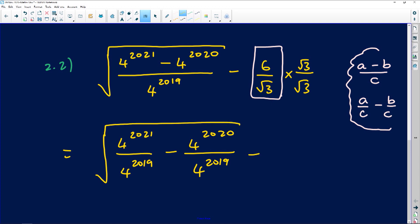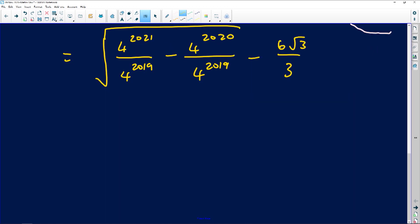When multiplying 6 over √3, it's 6 times √3, which is 6√3. According to laws of surds, √3 times √3 gives us 3. I'm going to apply laws of exponents. They say when you're dividing for same bases, you subtract the exponent. So 2021 - 2019 gives you 2, and 2020 - 2019 gives you 4¹. On the second one, 6 divided by 3 is 2√3. Now 16 will come from 4². 16 - 4 is 12. So I'm sitting with √12 - 2√3.